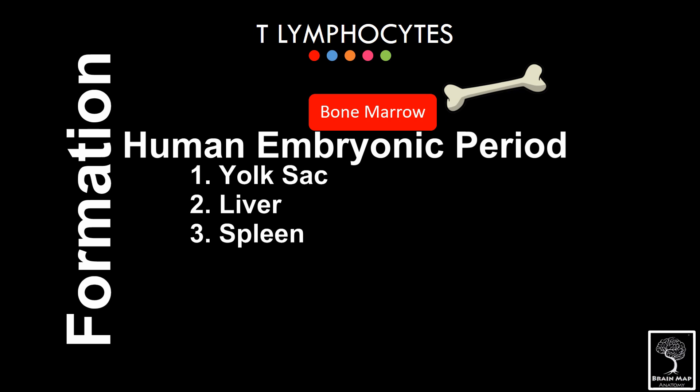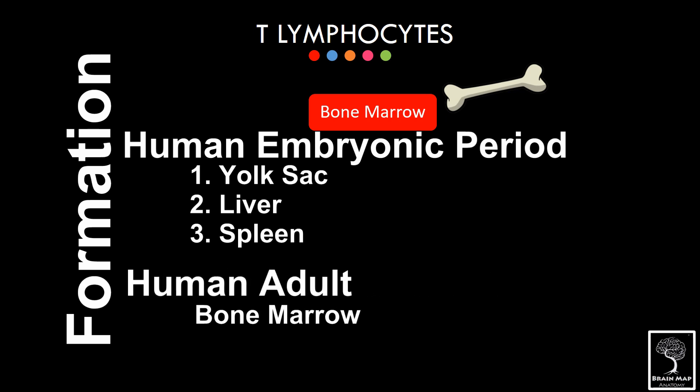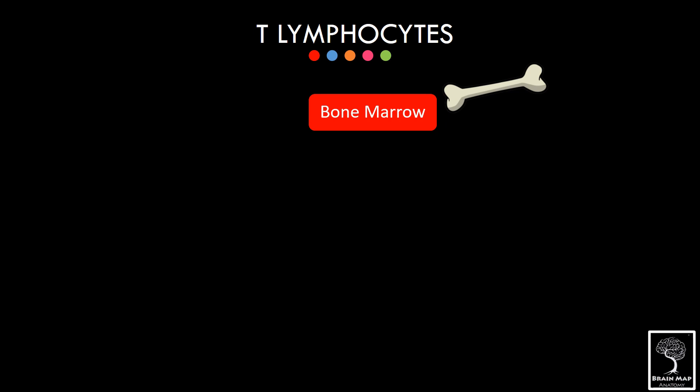In adults, lymphocytes are formed from the bone marrow which enters the blood. This is the common pathway for both B and T lymphocytes. From the bone marrow,